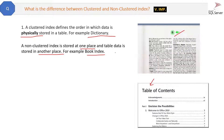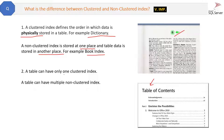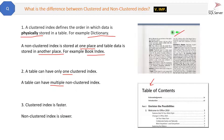Similarly, with a non-clustered index, the index is at one place and the table data is stored at another place. The second difference is that a table can have only one clustered index, whereas a table can have multiple non-clustered indexes. The third difference is that a clustered index is faster in comparison to a non-clustered index.